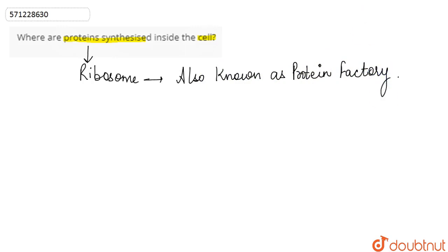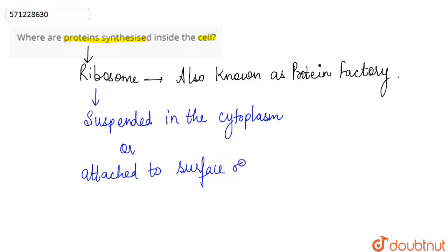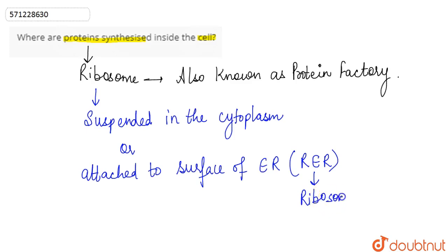Ribosomes are small cell organelles that are found either suspended in the cytoplasm, or they could be found attached to the surface of the endoplasmic reticulum. That type of endoplasmic reticulum is known as RER — rough endoplasmic reticulum — because the ribosomes are attached to its surface. So, proteins are synthesized in the ribosomes.